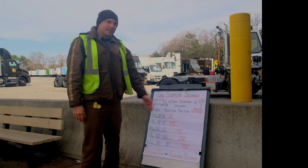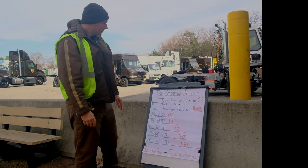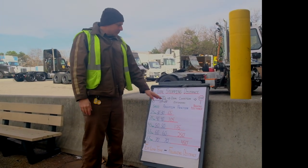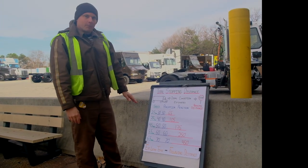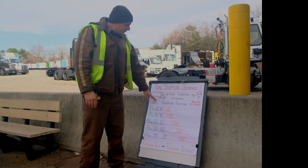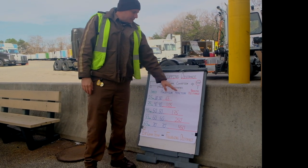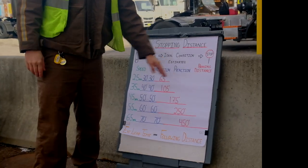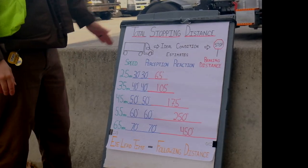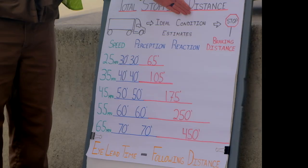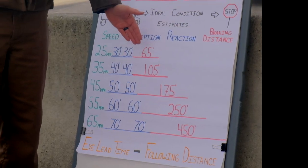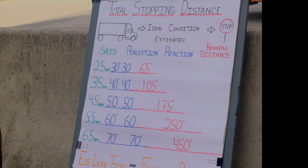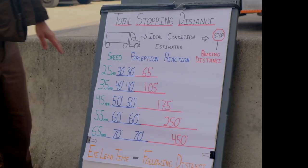Total stopping distance breaks down into four parts: your speed, your perception, your reaction, and your braking distance. These are ideal condition estimates, and there are a lot of variables that can change this.